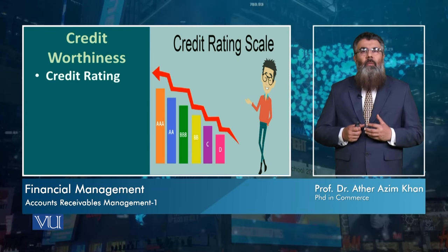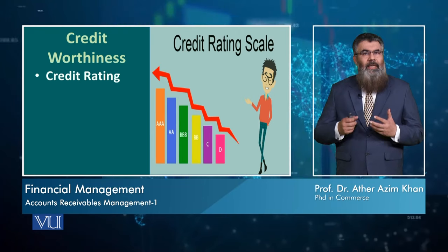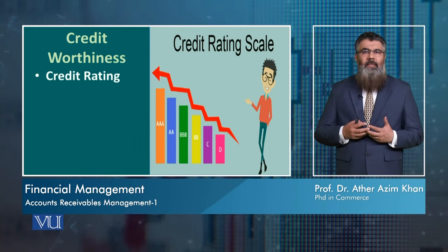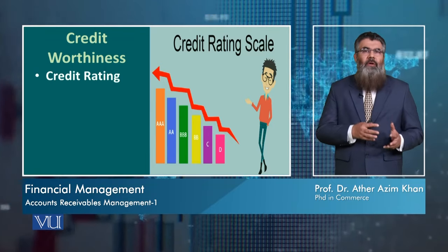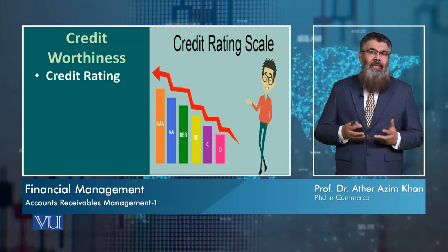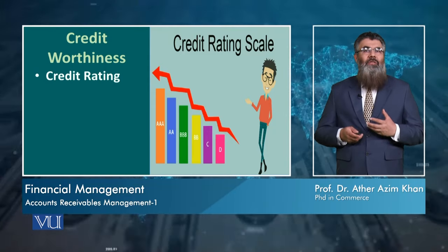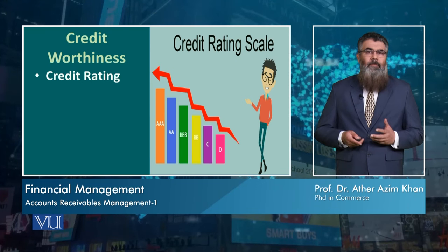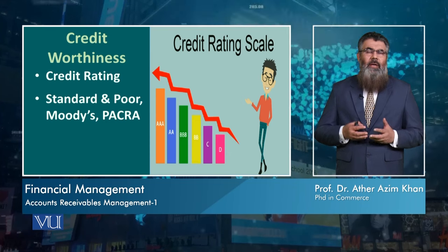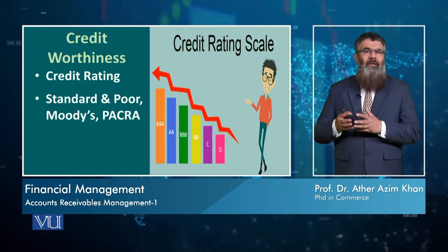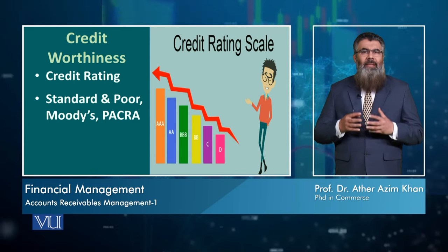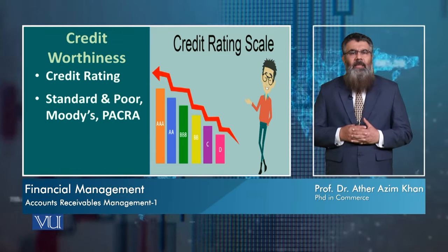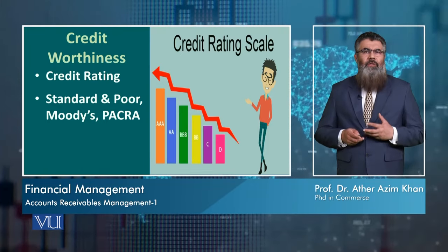For this, we have what is called credit rating. Just as students are awarded A, B, C, D grades for their academic performance, similarly business organizations are given ratings on the basis of their potential to repay their debts, their profitability, their liquidity, etc. This rating shows how capable a business is to pay off its debts. This rating process is done by several agencies with expertise in analyzing company performance, such as S&P (Standard and Poor), Moody's, and PACRA. These are names of some companies which do credit rating.